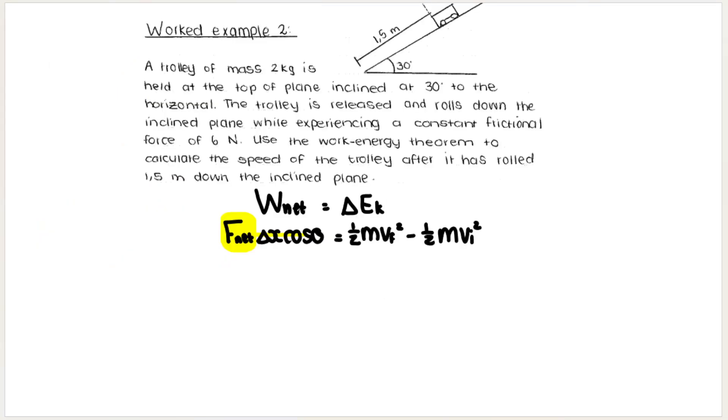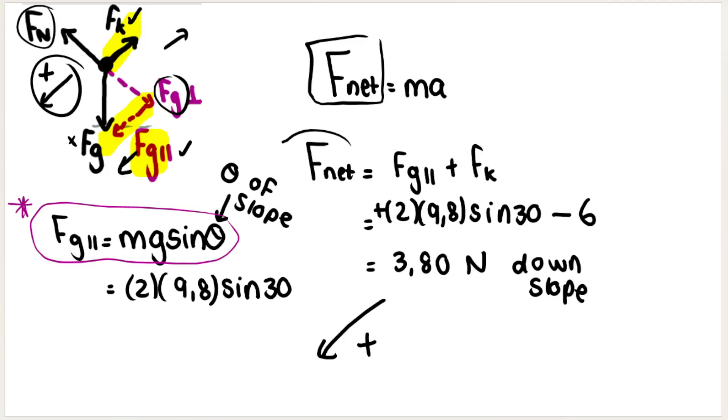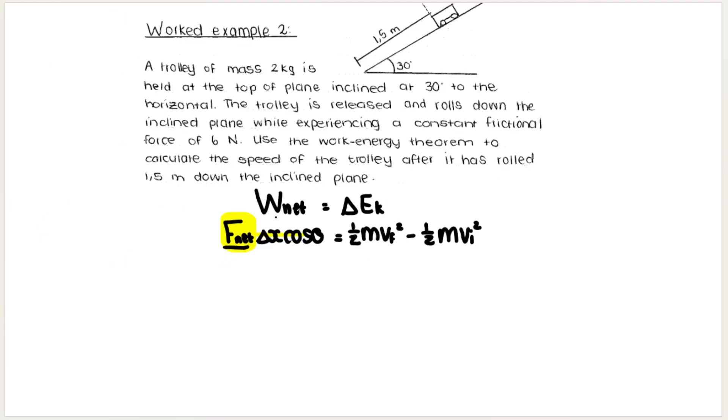Now we are ready to substitute into my work-energy theorem formula. Just as a reminder, we've now got Fnet 3.8. So Fnet to calculate Wnet, we need Fnet is 3.8. How far did we move? What was my displacement? They say 1.5 meters, so 1.5. Now in the Wnet formula, this θ over here is the angle between the net force and the displacement.